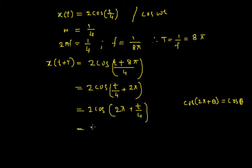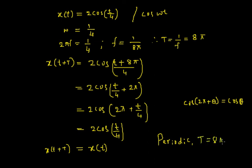So using that, I can write this as 2 times cosine of t by 4. And I know that this signal is the given signal x(t). Therefore, I have proved that x(t + T) equals the original signal x(t). And finally, I can say that the given signal is periodic with the fundamental period T equal to 8 pi.